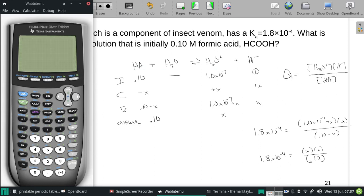So, 1.8 times 10 to the negative fourth times 0.1, and then take the square root of that. I get an x of 0.00424.